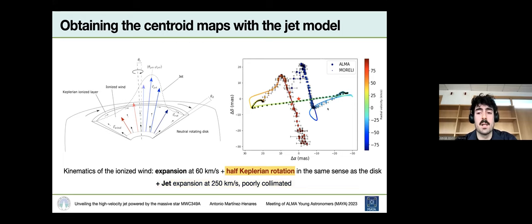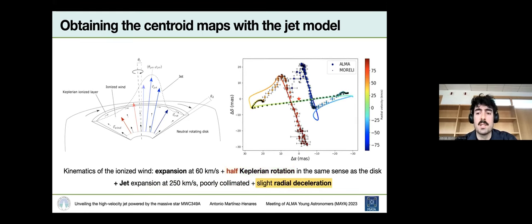This is an average case between the rotating and non-rotating case. The important thing here is that the jet and wind are rotating. So they are extracting angular momentum from the system, allowing for accretion to take place. The last step to fine-tune this model was to introduce a very tiny radial deceleration. If we introduce this small deceleration, we have a better agreement. This would be the final model. This will be the model that we are presenting to reproduce the ALMA observations.